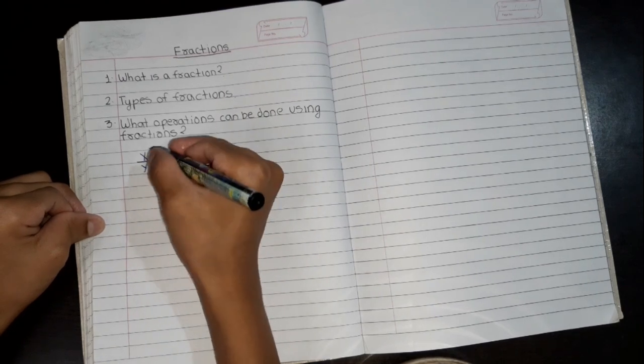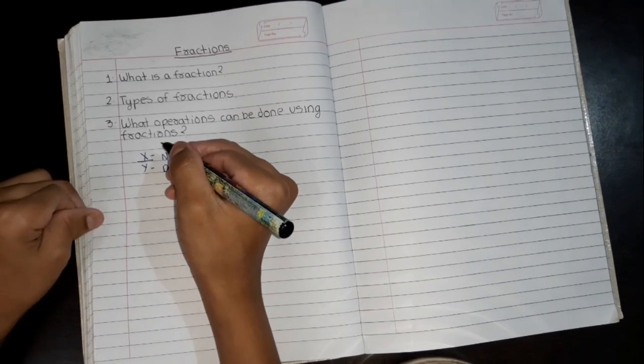So this thing is called as fraction. Numerator expresses the value of the fractional number. The denominator shows the number of equal parts the whole has divided into.